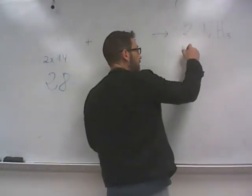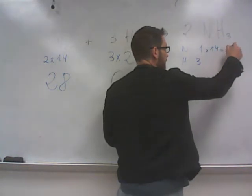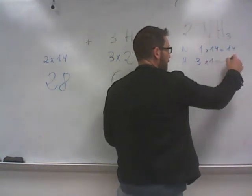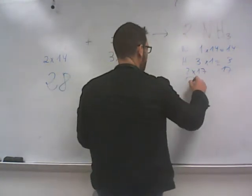And ammonia is nitrogen 1, hydrogen 3. 1 times 14 is 14, and 3 times 1 is 3, so it's 17. 2 times 17 is 34.